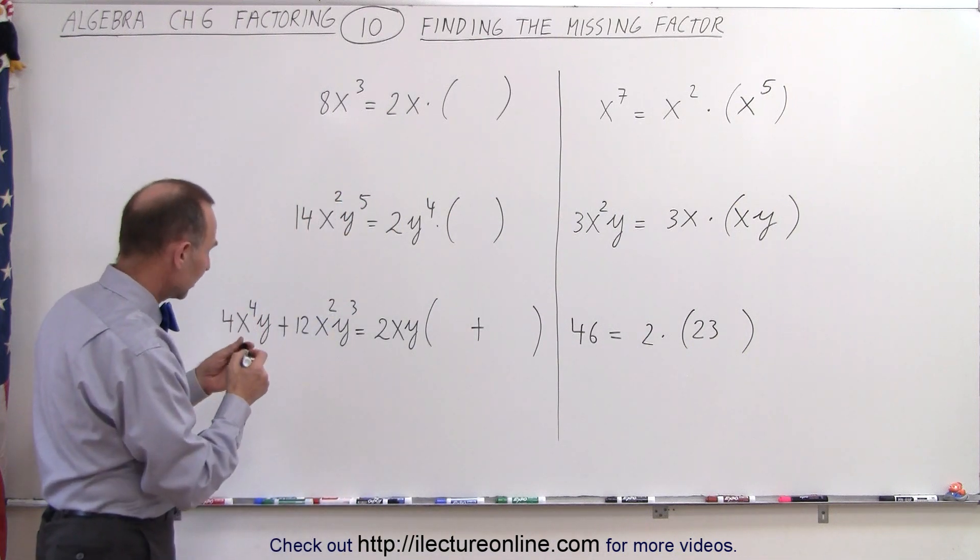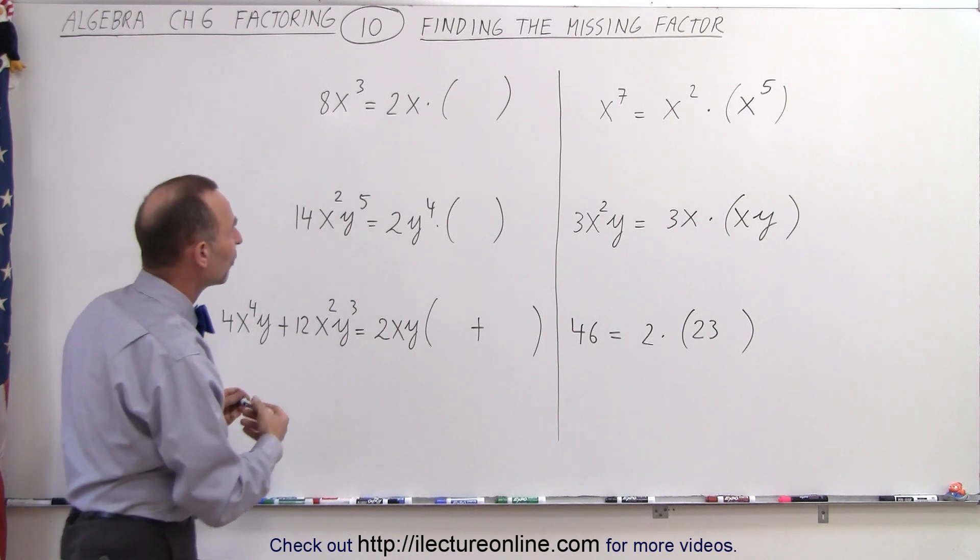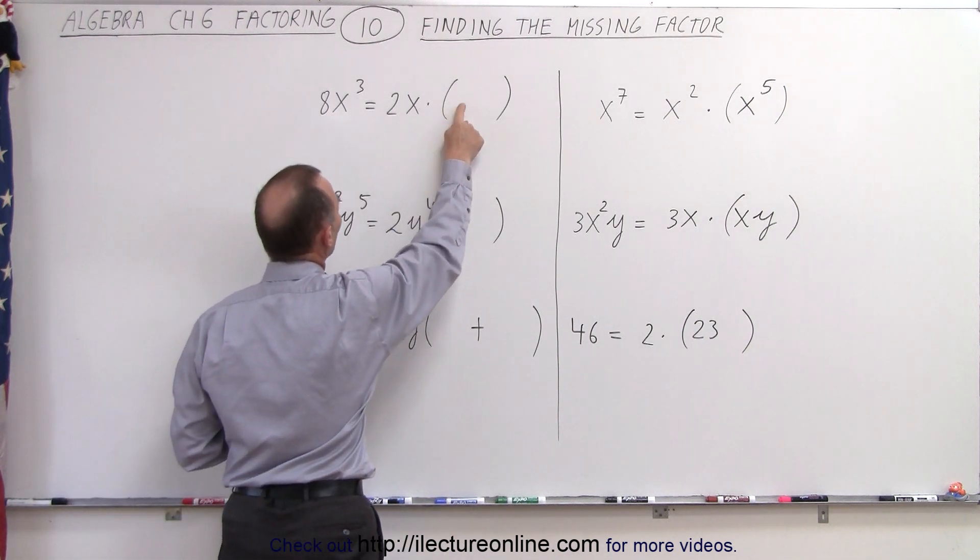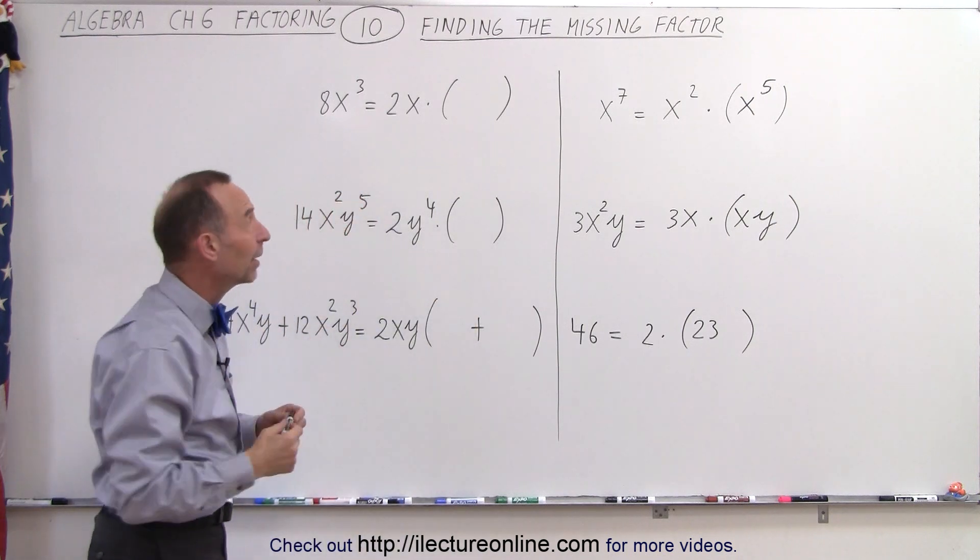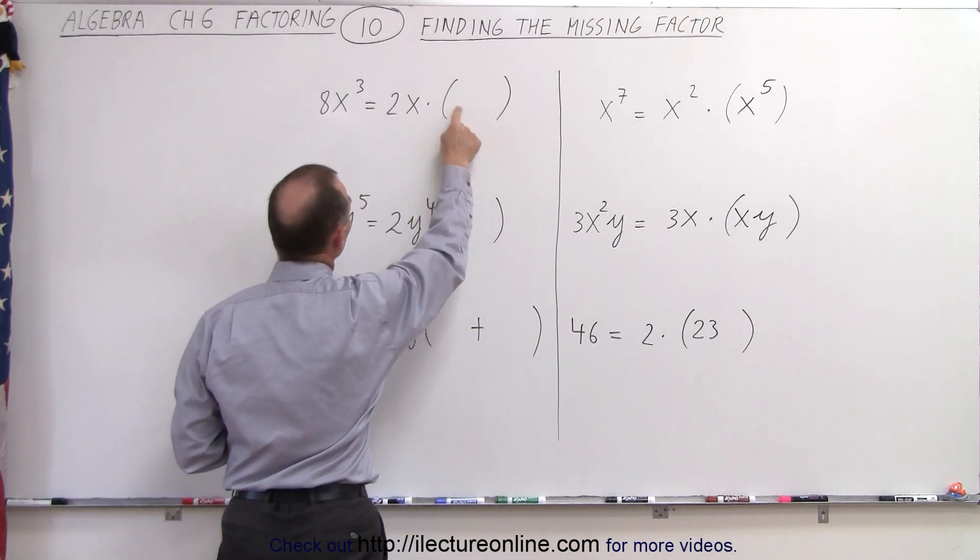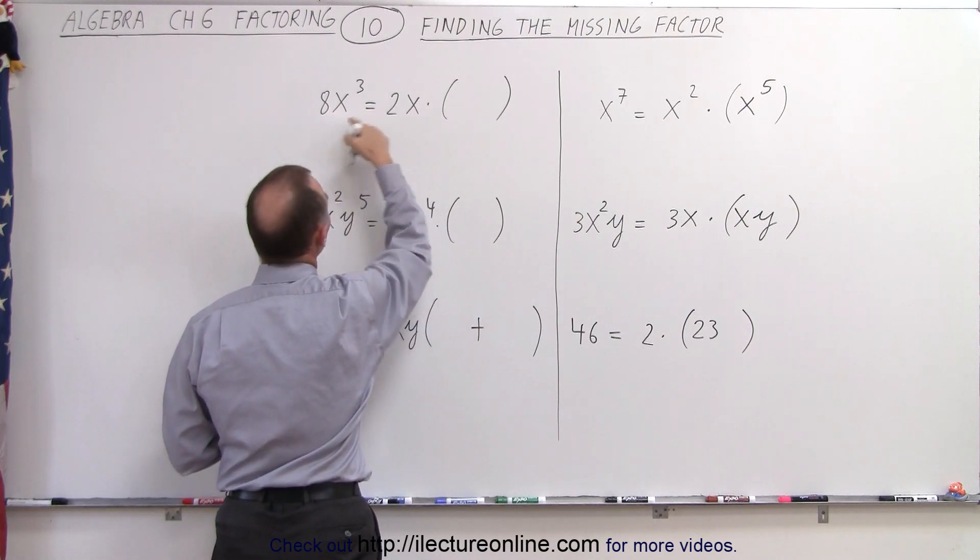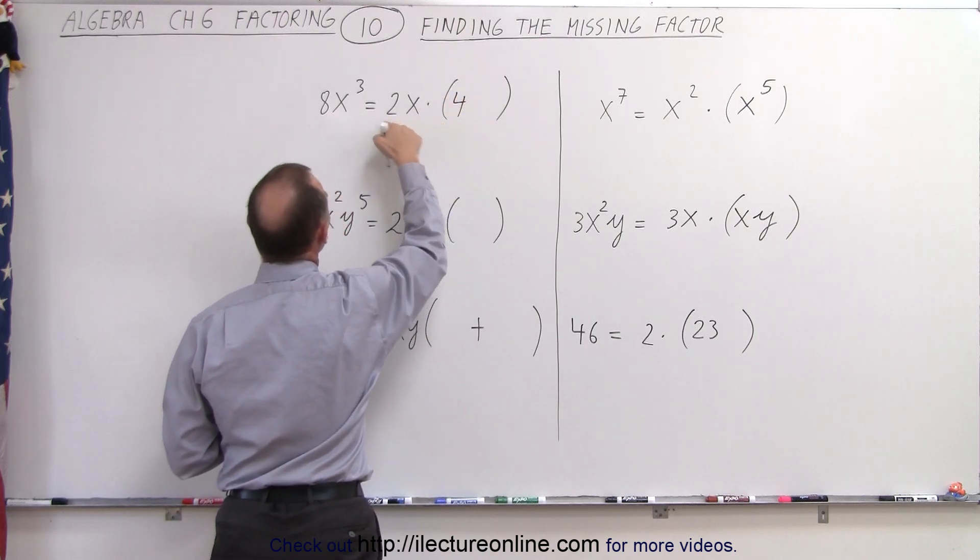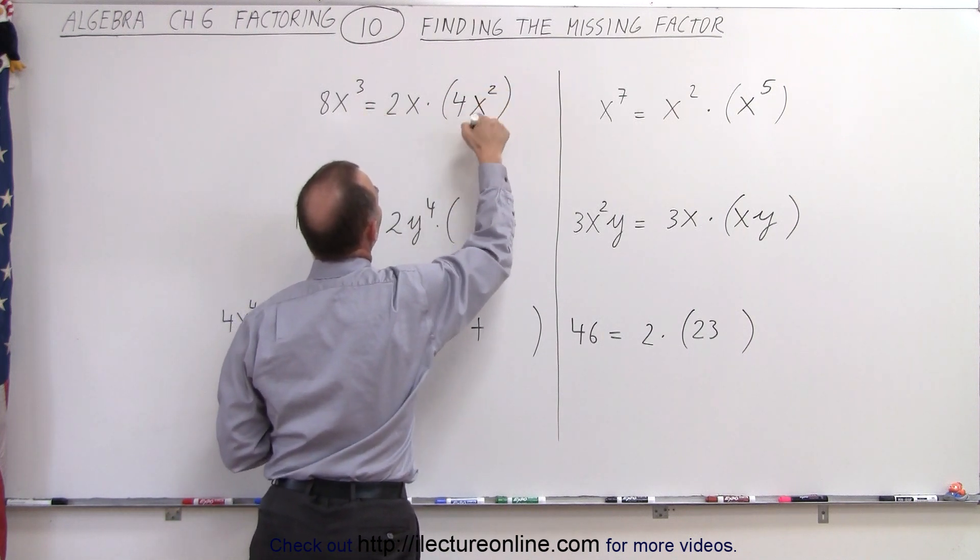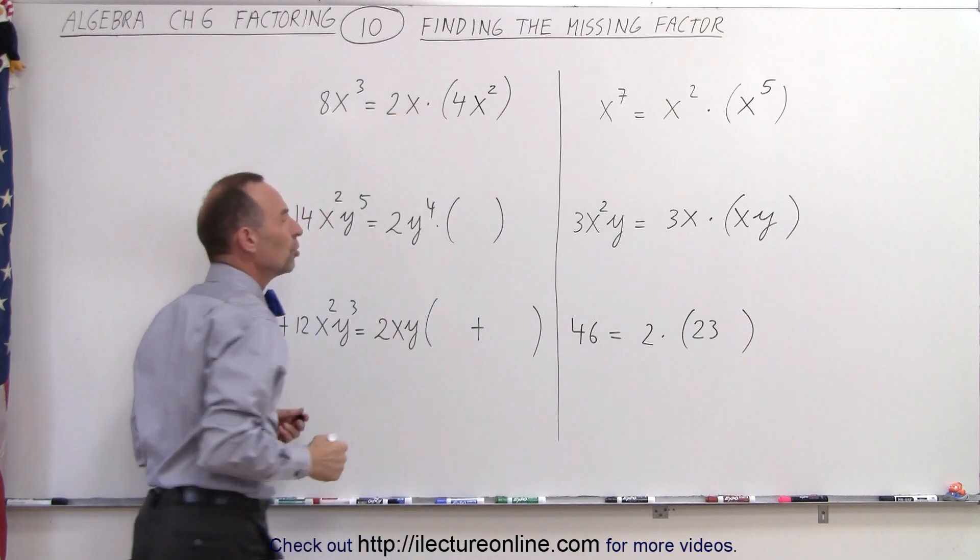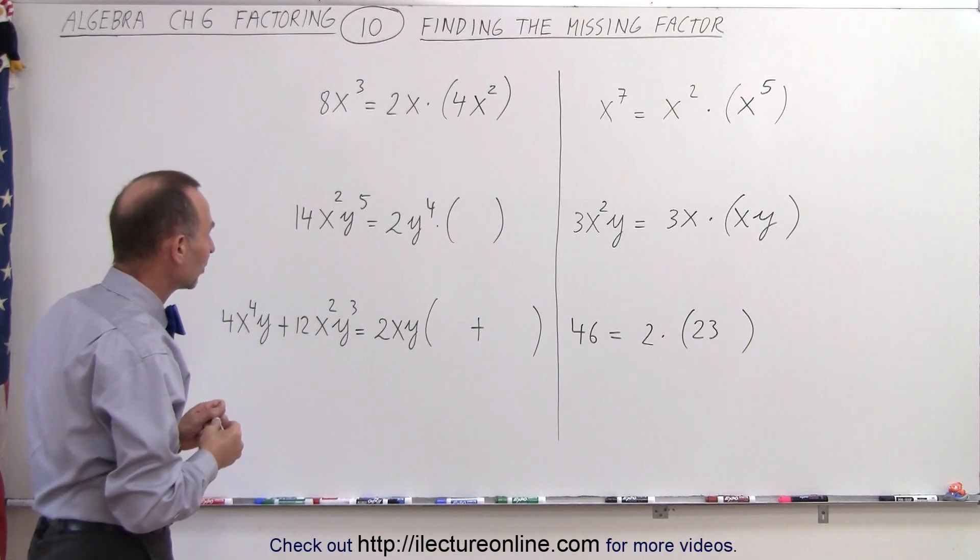How about over here? 8x³ equals 2x times what? Well, first of all, we're going to need a 4, because 4 times 2 gives me 8. And that's sometimes the best way to think about it. What times this gives me what I need over here? So in this case, 4 times 2 gives me 8. And what times x gives me x³? Well, that would be x². x² times x gives me x³. And that's usually the best way to think about how to find the missing factor.